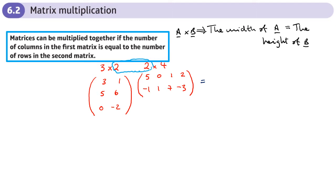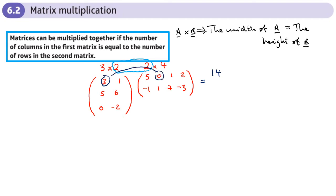So we do 3 times 5, which is 15, plus 1 times negative 1 — going across the row and down the column — that gives 15 minus 1 = 14, which goes in the first row, first column. Then 3 times 0 is 0, plus 1 times 1 is 1, so the second element in the top row is 1.